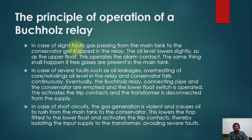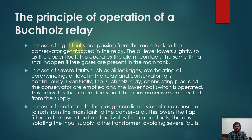There are two contacts in the Buchholz relay. For a light fault, one contact operates and initiates an alarm. For a heavy fault, the second contact operates — heavy oil flows with pressure, and the transformer trip is activated immediately. In the case of a short circuit, gas generation is violent and causes an oil rush from the main tank to the conservator tank. This lowers the flap fitted to the lower float and activates the trip contacts, thereby isolating the input supply to the transformer and avoiding severe damage.